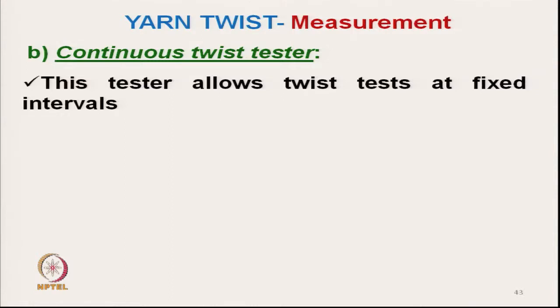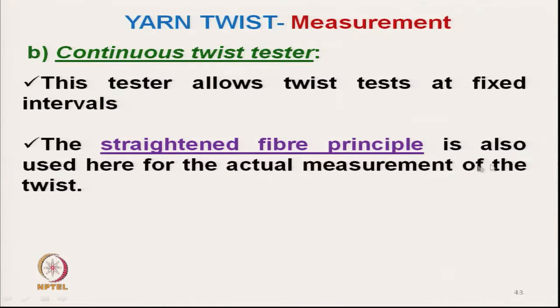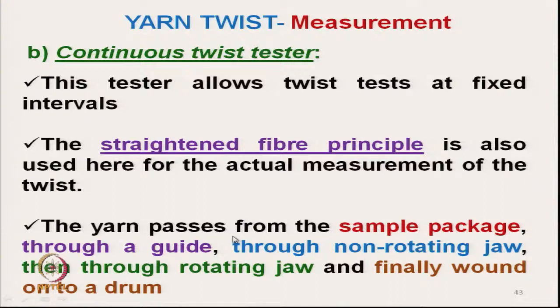The next method is the continuous twist tester. The principle is exactly the same, but here yarn is tested directly from a package and, after testing, wound onto another package. It is an intermittent process but the strand of yarn is continuous, so we do not take cut yarn. The same straightened fibre principle is used. The yarn passes from the supply package through a guide, through a non-rotating jaw, and finally winds onto a drum.